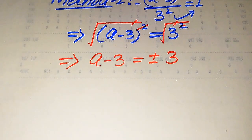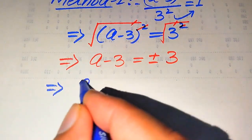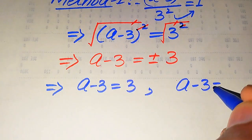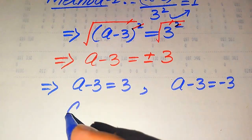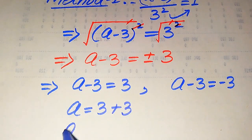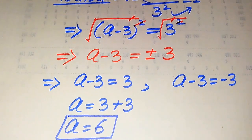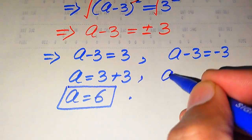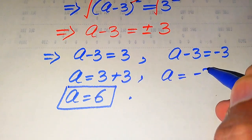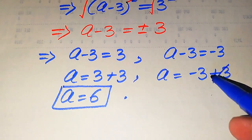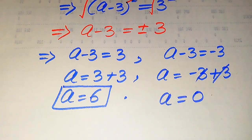We break the right hand side into two cases. First, the positive case: a minus 3 equals positive 3, giving a equals 3 plus 3, which is 6. Second, the negative case: a minus 3 equals minus 3. Moving the minus 3 to the right hand side, the negatives cancel and we get a equals 0.